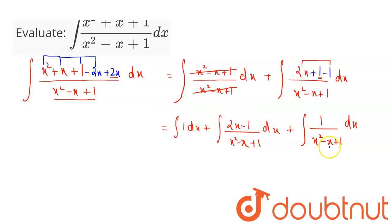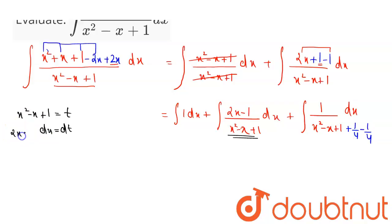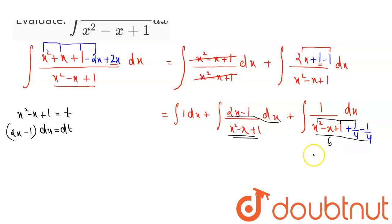Here I am adding and subtracting 1/4. Now let us take the substitution t equal to x squared minus x plus 1. Differentiating both sides with respect to x gives 2x minus 1 dx equals dt. The denominator can be written by completing the square: x minus half whole squared plus the quantity root 3 over 2 squared.